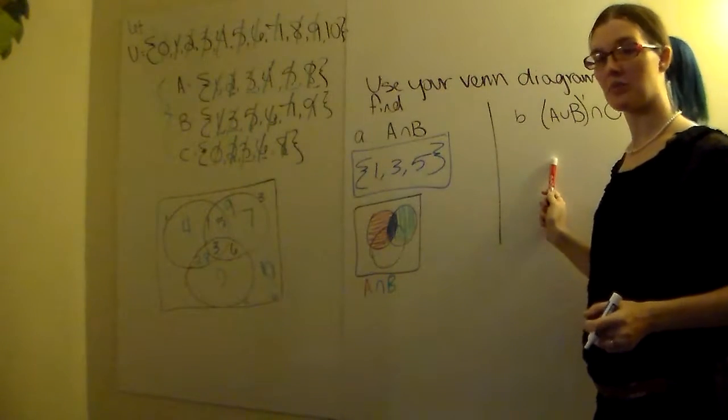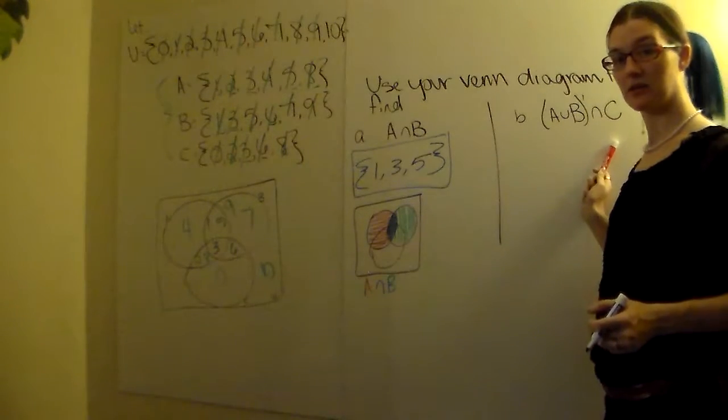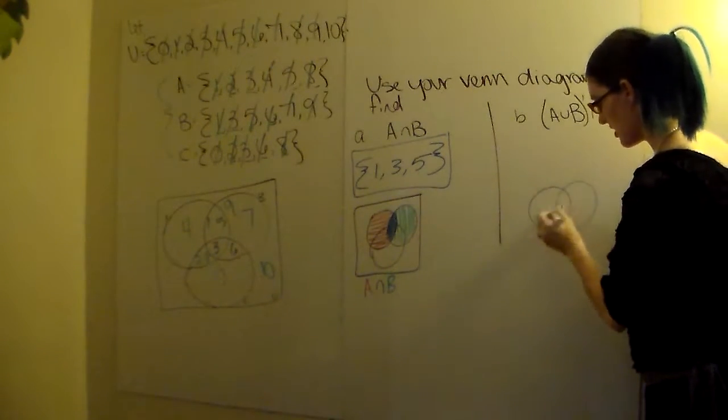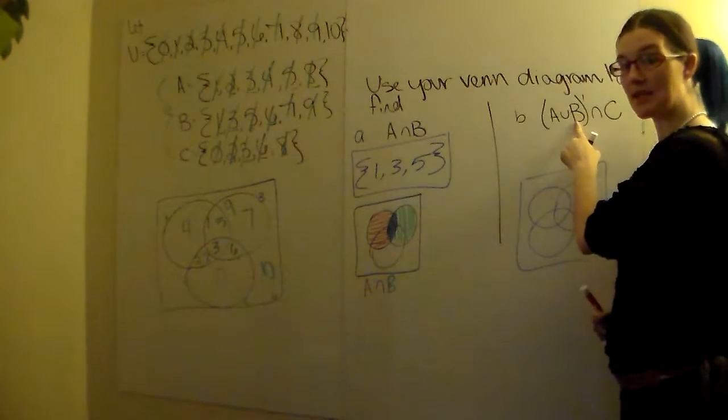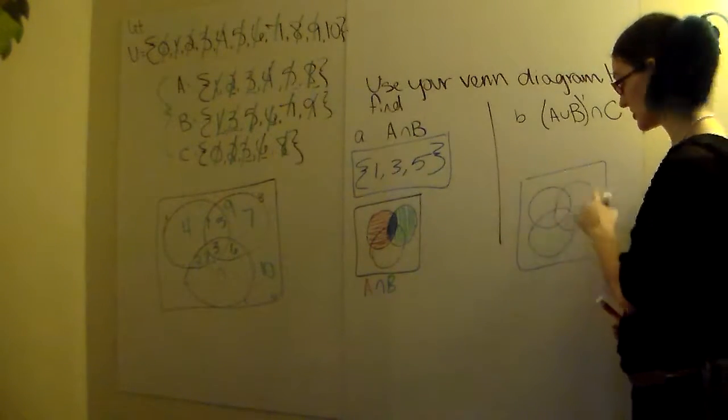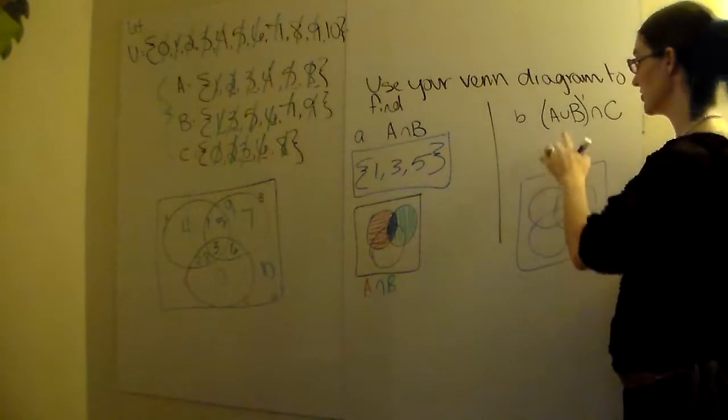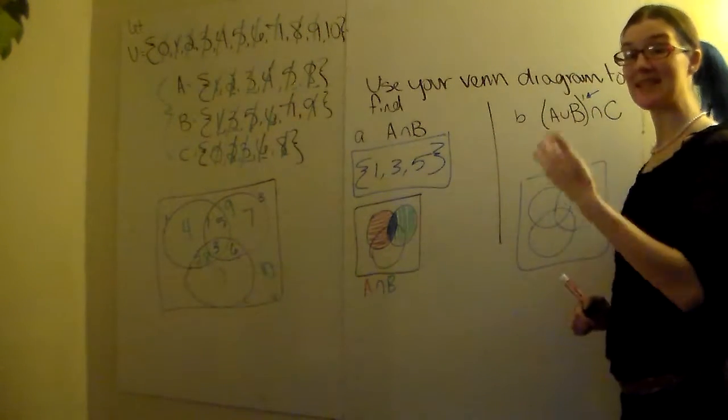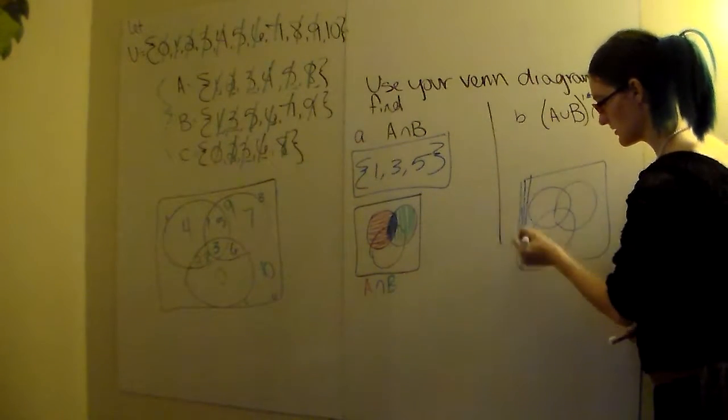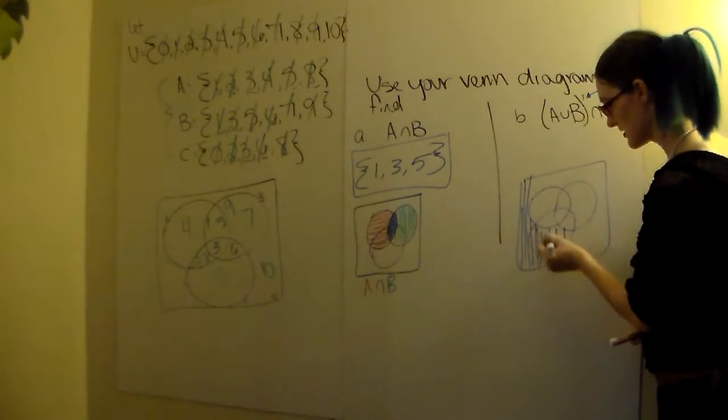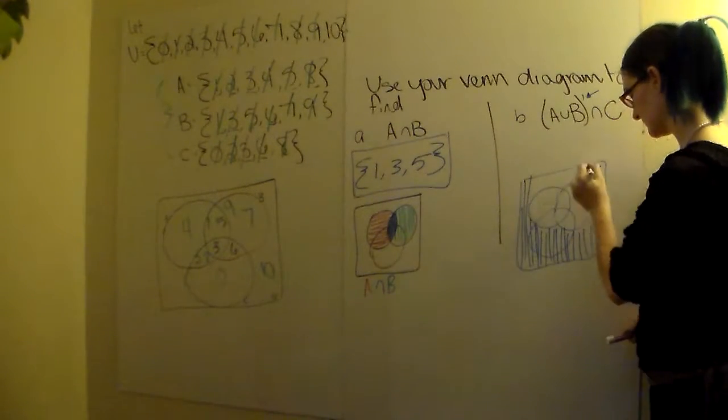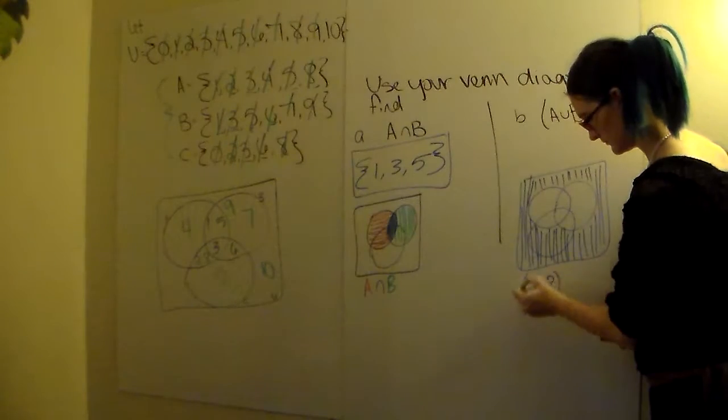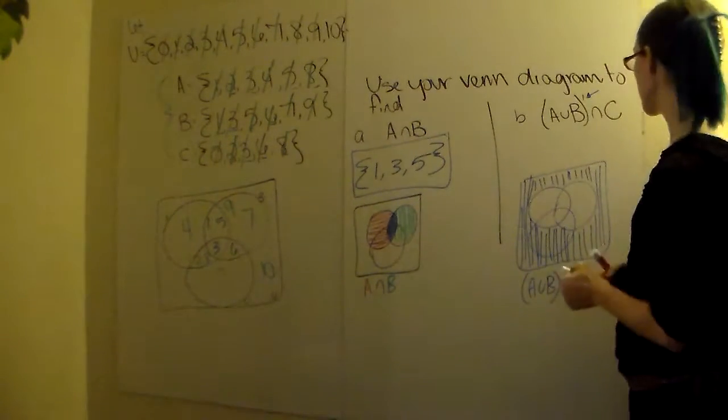For this one, we've got A union B complement intersected with C. Now when you're doing a shading with a union, you're going to include everything. But we know what A union B looks like. So when we're doing our Venn diagram, A union B is everything in circle A and everything in circle B. So even the overlaps, everything in A and B is going to be included in A union B. But we want the complement. So the complement is going to be the exact opposite. Nothing in A and nothing in B. So that's going to include everything except A and B. So that is A union B complement.